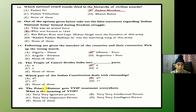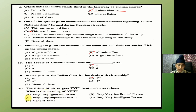The Prime Minister gets VVIP treatment everywhere. What is the meaning of VVIP? The answer is C — Very Very Important Person.